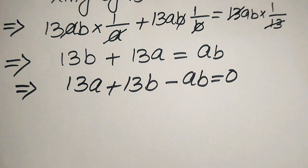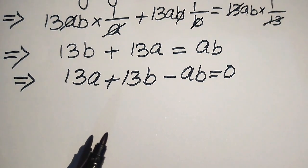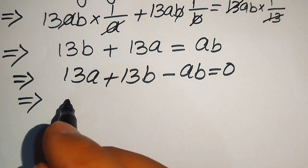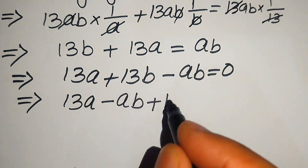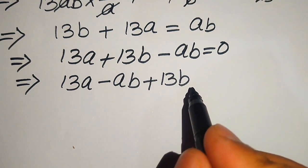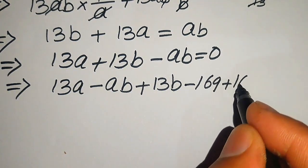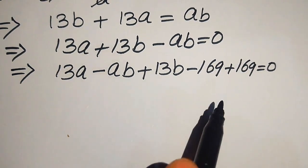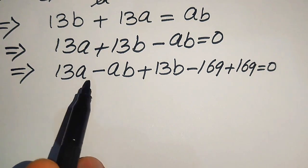Now we need to factor this equation. We rearrange the terms as 13a minus ab plus 13b, and in order to make the factors we need to add 169 to the expression. We add 169 for the purpose of making the factors.